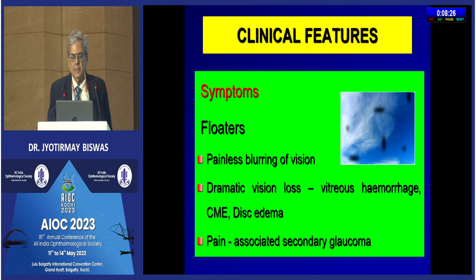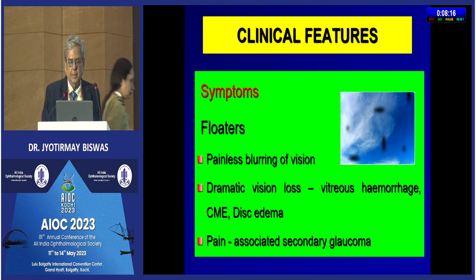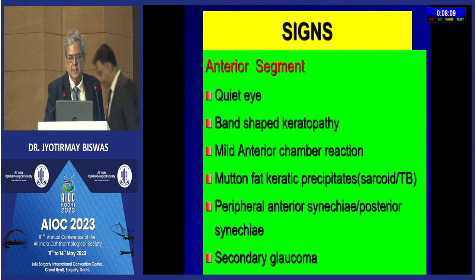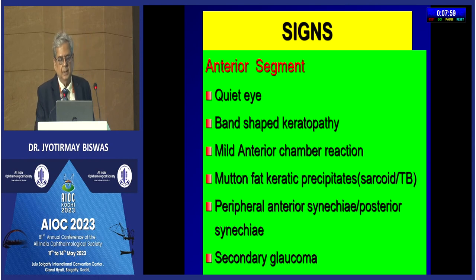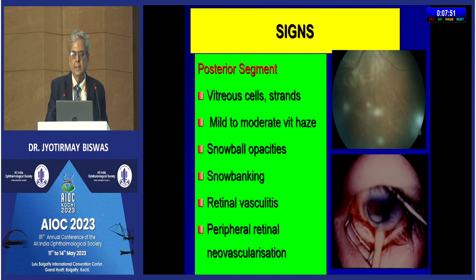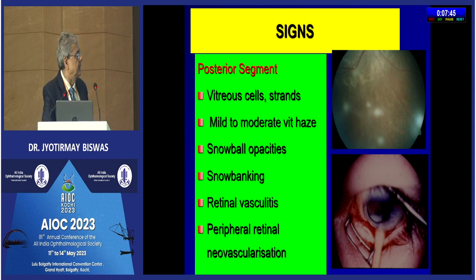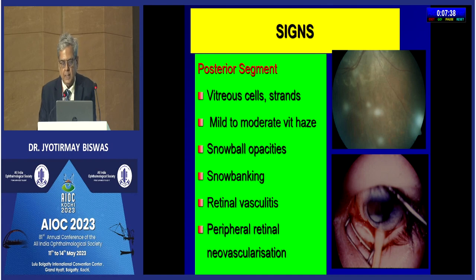Patients will always tell that they have floaters and painless blurring of vision. There can be dramatic vision loss if there is disc edema or cystoid macular edema. Pain is associated with secondary glaucoma. The anterior segment may be quiet with band keratopathy and mild anterior chamber reaction. Mutton-fat KPs can be associated in sarcoid or TB. Peripheral anterior synechiae, posterior synechiae, secondary glaucoma are possible. The vitreous characteristically shows snowball exudates, mild to moderate vitreous haze, snowbanking, retinal vasculitis, and peripheral retinal neovascularization — particularly seen in children.